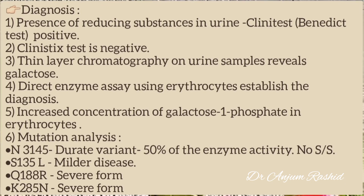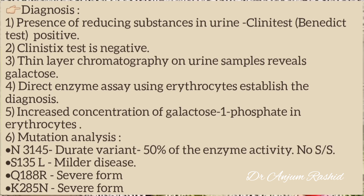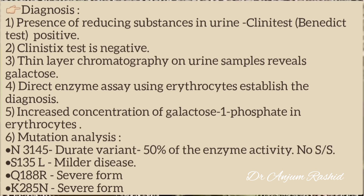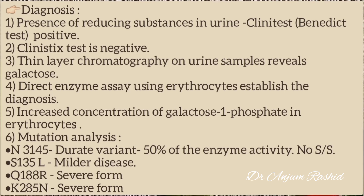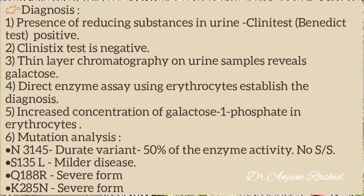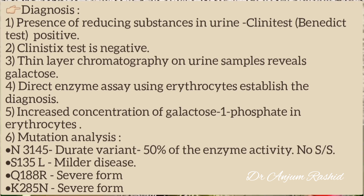For diagnosis: there is presence of reducing substances in urine — the Clinitest or Benedict test is positive, while glucose oxidase strip test is negative. Thin layer chromatography on urine samples reveals galactose. Direct enzyme assay using erythrocytes establishes the diagnosis. There is increased concentration of galactose-1-phosphate in the erythrocytes.